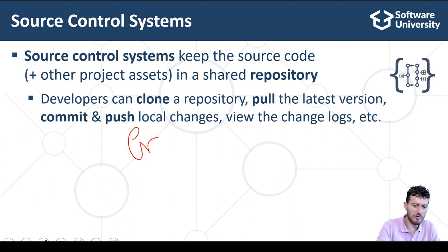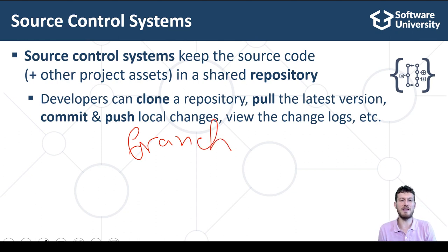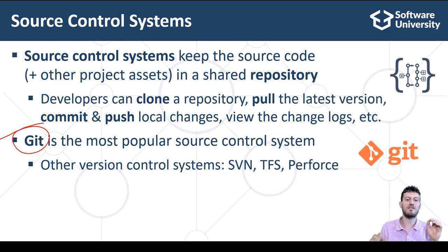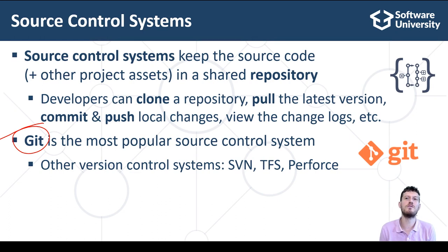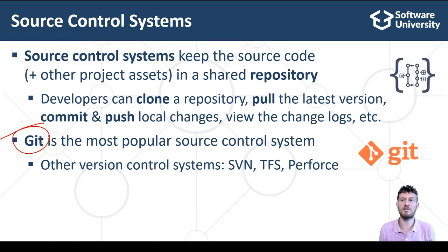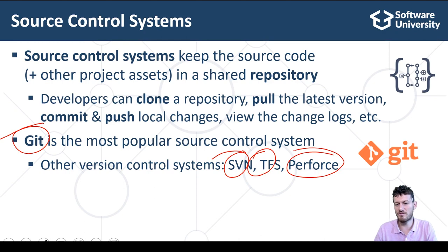Developers can also branch the source code into separate lines of development, and many others. Git is the most popular source control system in modern software development. It is a distributed source control system, a very powerful tool for version control and team collaboration at the source code level. Git is the system behind GitHub, the largest software project hosting portal in the world. Other popular version control systems are TFS, SVN, Perforce and others.